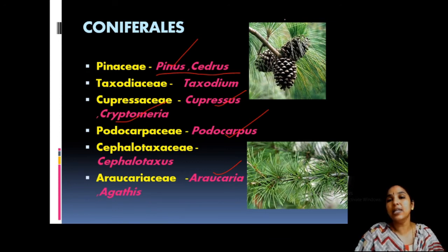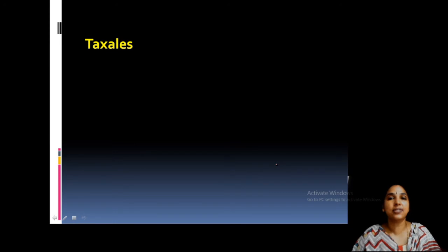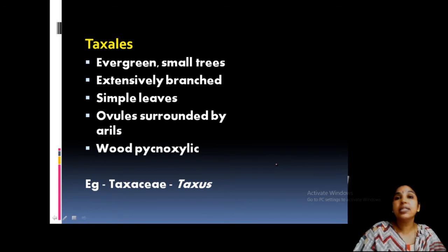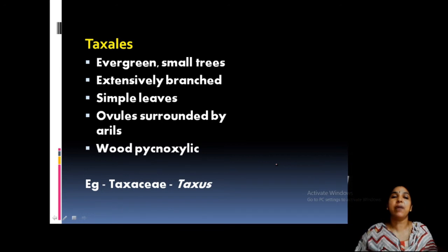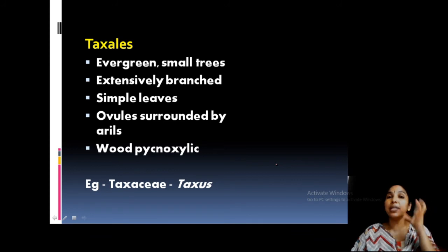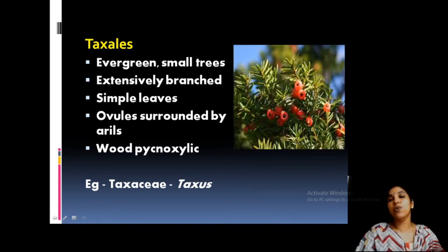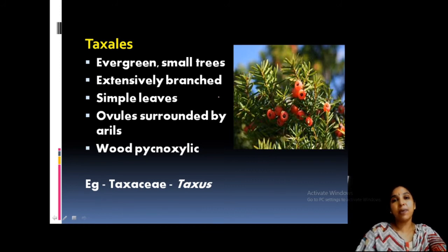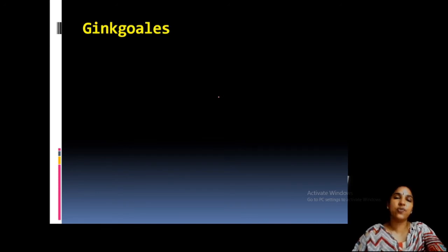You can see both Pinus and Cedrus have needles, but the needle arrangement is different. The next order in Coniferopsida is Taxales, which includes only one genus, Taxus. They are evergreen small trees, extensively branched, with simple leaves — that is a very important point. Another peculiar feature is that ovules are surrounded by an aril, which is a fleshy outgrowth from the seed. The wood is pycnoxylic like Coniferales.